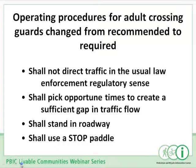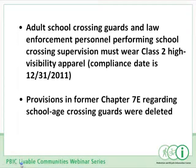Because of the paramount importance of school children's safety, adult crossing guards must follow specific requirements when controlling traffic and assisting school children across the road. There's also a new requirement added to Part 7 that adult school crossing guards and law enforcement officers performing school crossing supervision shall wear high visibility safety apparel, even on non-federal aid highways. There is a compliance date of December 31, 2011. This extends to all highways and streets, not just those that are federal aid. Also, the provisions in Chapter 7E regarding student safety patrols have been deleted because it's not appropriate for students to control traffic.